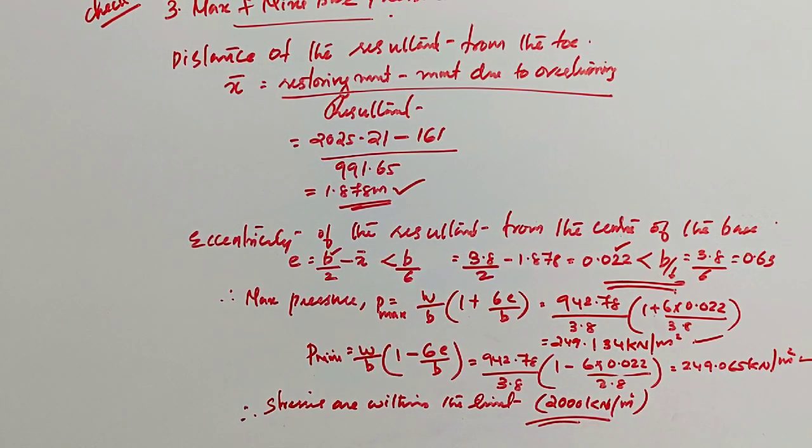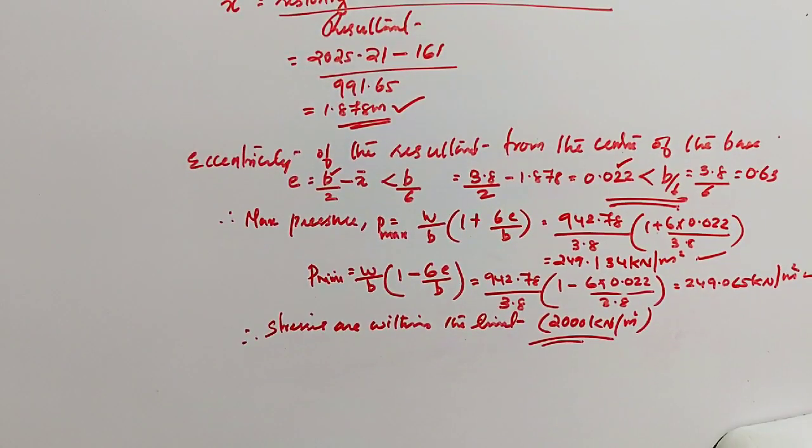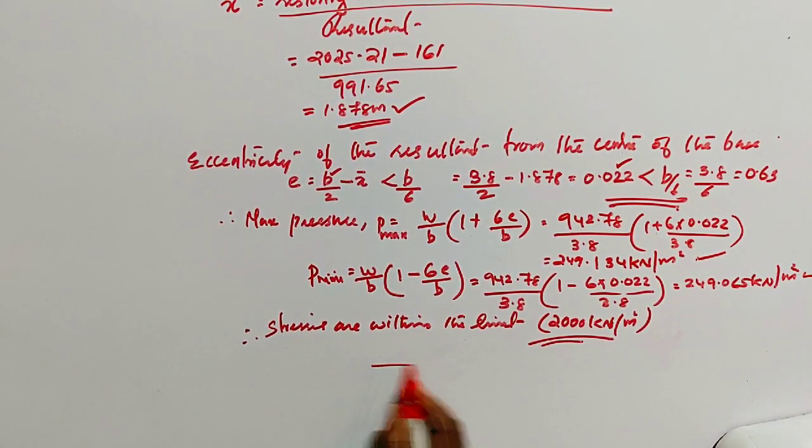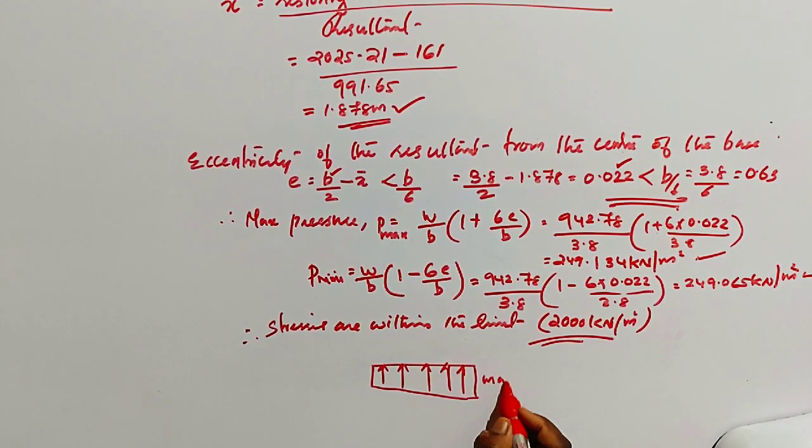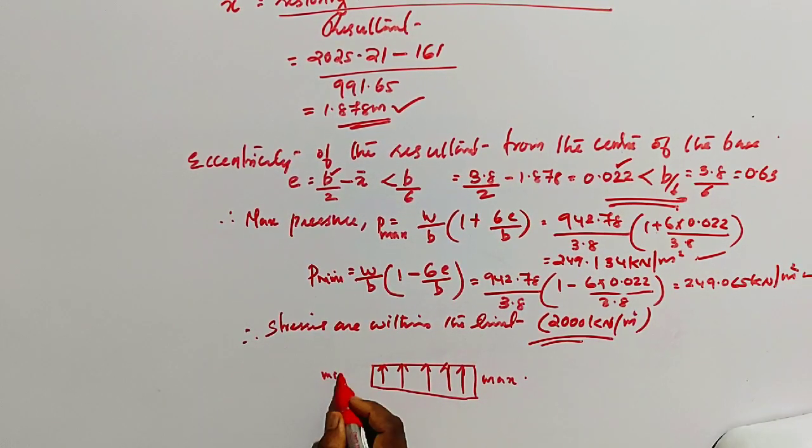It is within the permissible limit because the maximum and minimum base pressures are 249.134 and 249.06. The stresses are within the permissible limit. Then we have to draw the pressure distribution diagram, that is maximum and here it is minimum.